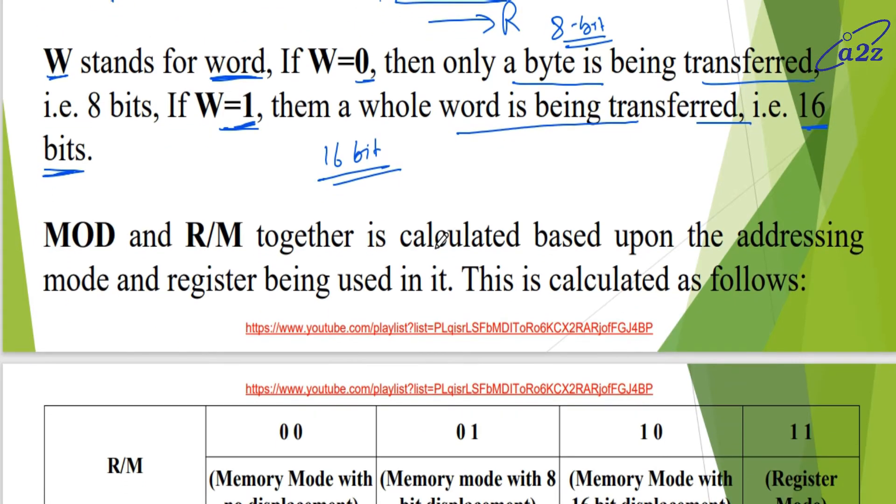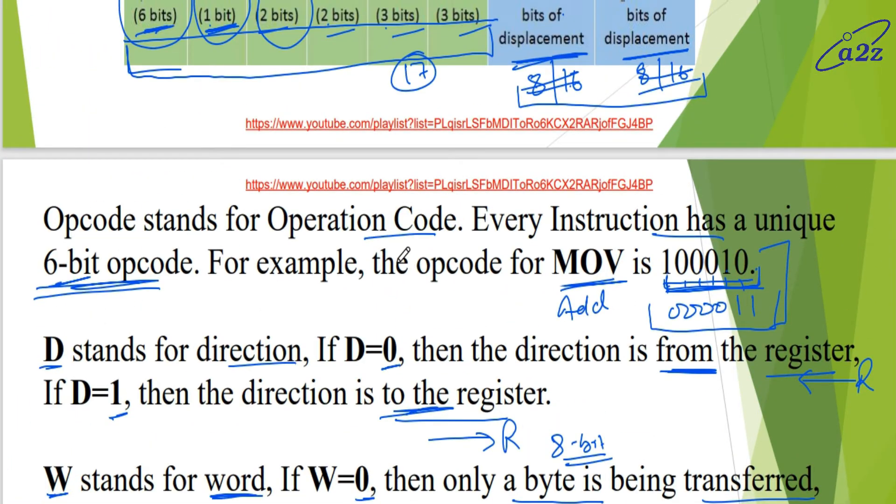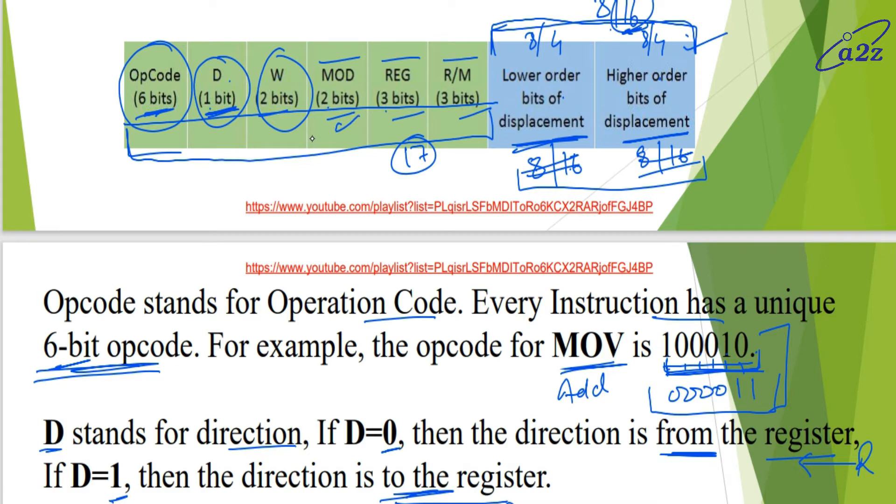Next is mode and R/M. Mode and R/M together is calculated based upon the addressing mode and register being used in it. These two fields tell us which addressing mode is there and which register is being used. See, this is R/M, this is mode. Mode field is here, R/M field is here. So we can say that R/M is row wise and mode is column wise.